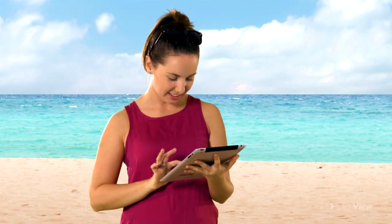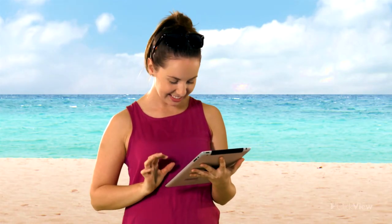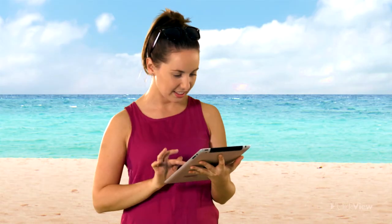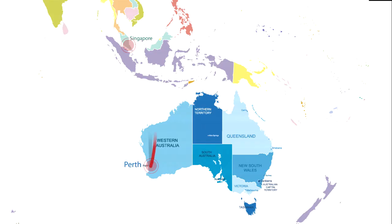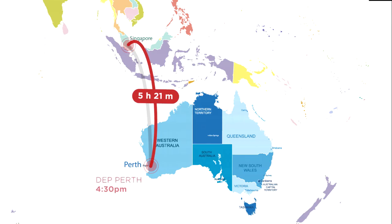She returns to Perth for a week and then she flies back to Japan via Singapore. The flight to Singapore takes 5 hours and 21 minutes. Departure time from Perth is 4.30pm. So what time will she land in Singapore? 9.51am. And they're in the same time zone, so no adjustment needed.